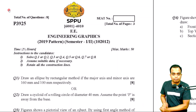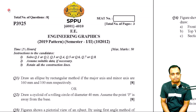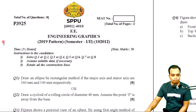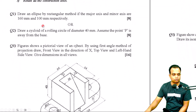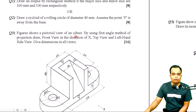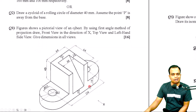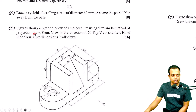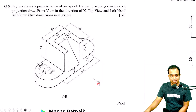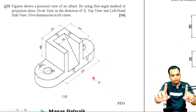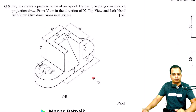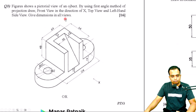April 2023 engineering graphics paper from Pune University SPPU — problem number three. The figure shows a pictorial view of an object, a 3D view showing all dimensions: length, width, and height. Using the first angle method of projection, draw the front view in the direction of X, the top view from above, and the left-hand side view.